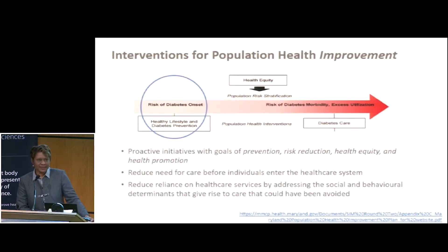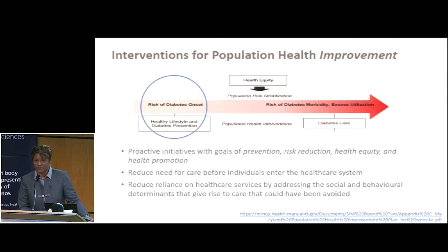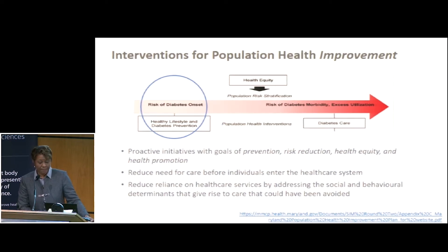Today I'll give one example of a population health improvement intervention. The population health improvement end of the spectrum focuses on proactive initiatives. There is also a population health management end — healthcare systems define their populations as patient populations within their walls. Population health improvement interventions are designed to reduce the need for individuals to enter healthcare systems by addressing behavioral and social determinants that give rise to care that otherwise could have been avoided.